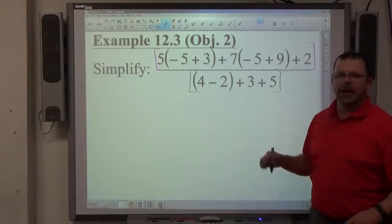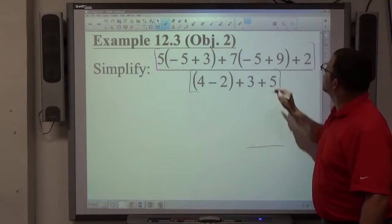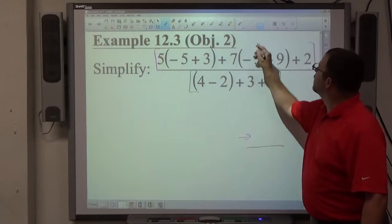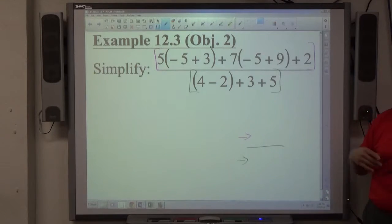The entire denominator has to be evaluated down to a single number. My goal is to get some number on top divided by some number on bottom, and then reduce that fraction as much as possible. That's what I want to do with a problem like this.